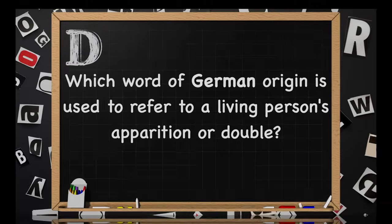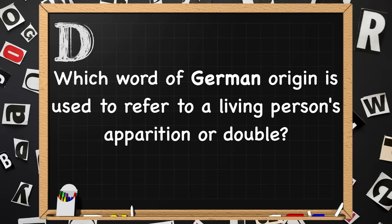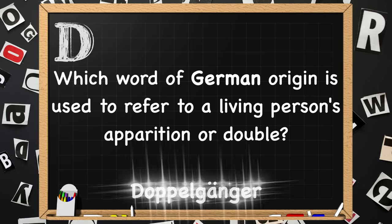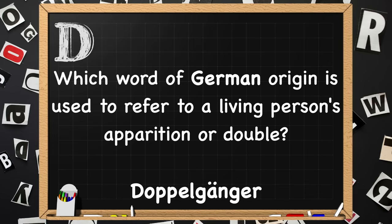Beginning with D. Which word of German origin is used to refer to a living person's apparition or double? Doppelganger.